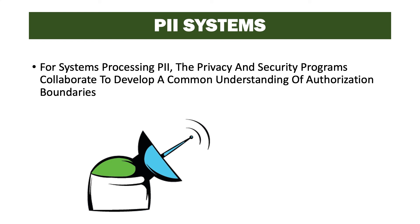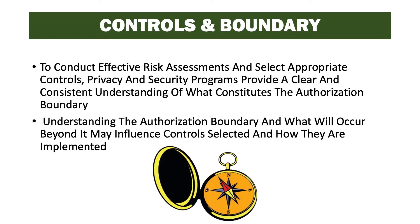For systems processing PII, or personally identifiable information, privacy and security programs collaborate to develop a common understanding of the authorization boundaries. To conduct effective control assessments and select appropriate controls, both programs provide a clear and consistent understanding of what constitutes the authorization boundary. Understanding the authorization boundary and what occurs beyond it may influence which controls are selected and how they are implemented, including cases where a low impact system in the same bounds as a high impact system may require controls beyond its risk rating.